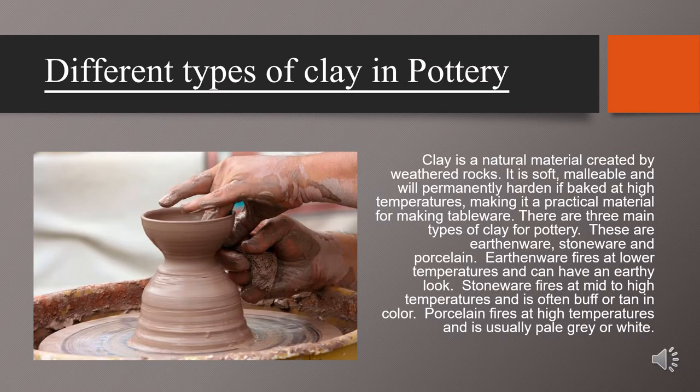In this slide I will be telling you about different types of clay in pottery. First of all, clay is a natural material created by weathered rocks. It is soft, malleable, and will permanently harden if baked at higher temperatures, making it a practical material for tableware. There are three main types of clay for pottery: earthenware, stoneware, and porcelain.